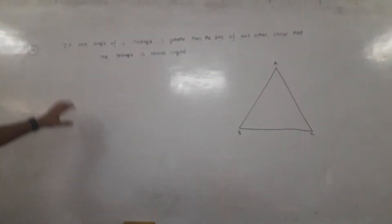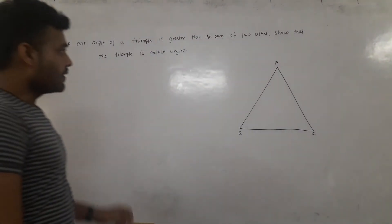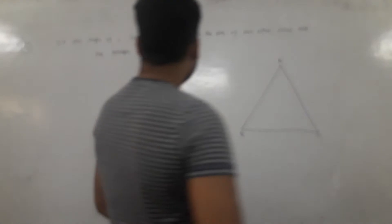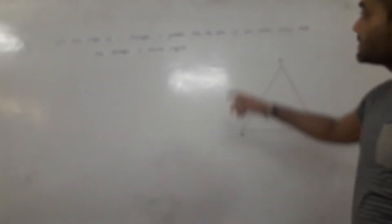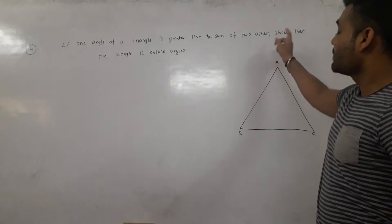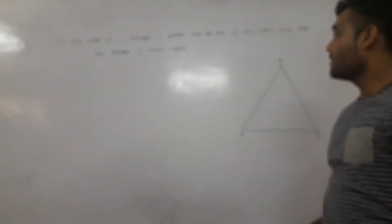Hello everyone. I am going to ask the 14th question. What is the 14th question? If one angle of a triangle is greater than the sum of the other two, show that the triangle is obtuse angled.